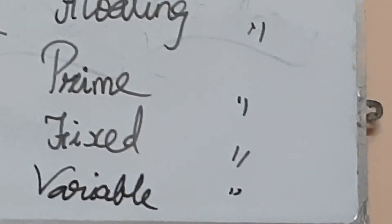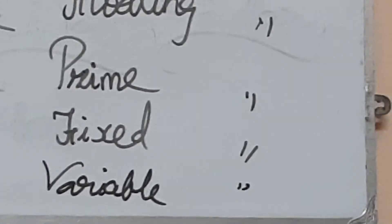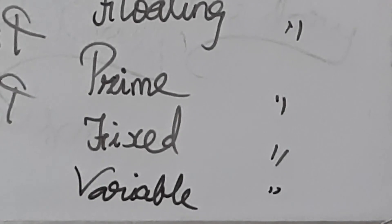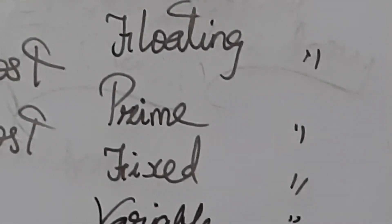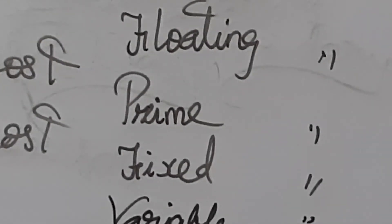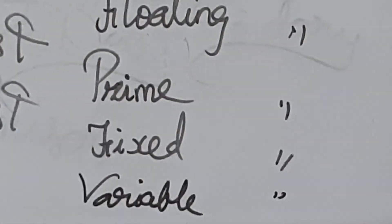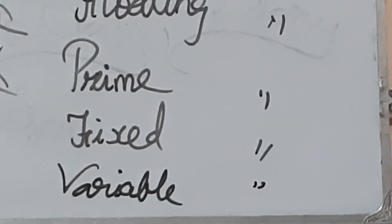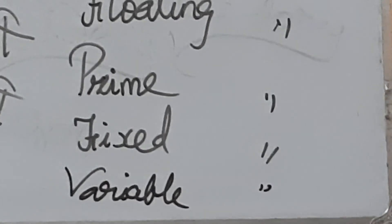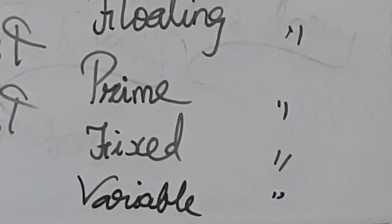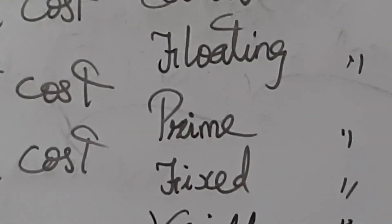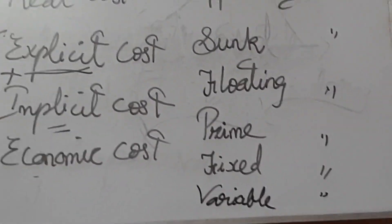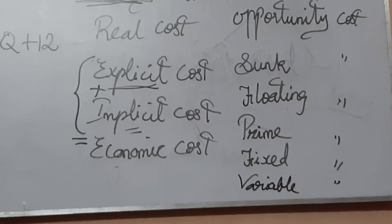Variable cost varies with the level of output. For example, wages for temporary workers are variable — permanent workers have a fixed salary, but temporary workers are paid according to how much production they give. That is called variable cost. Thank you, children.